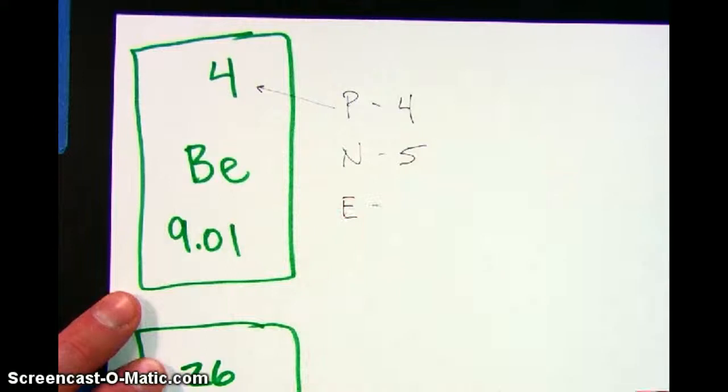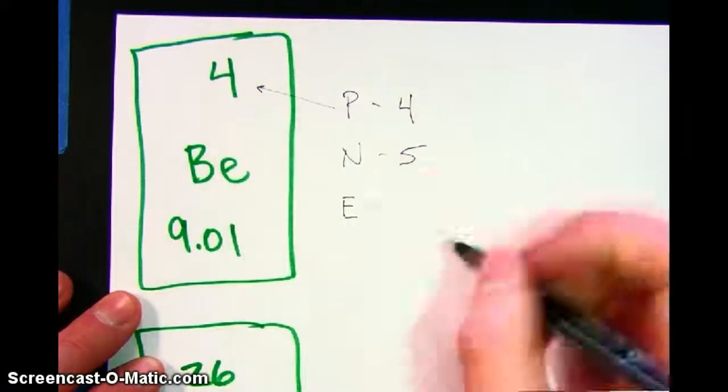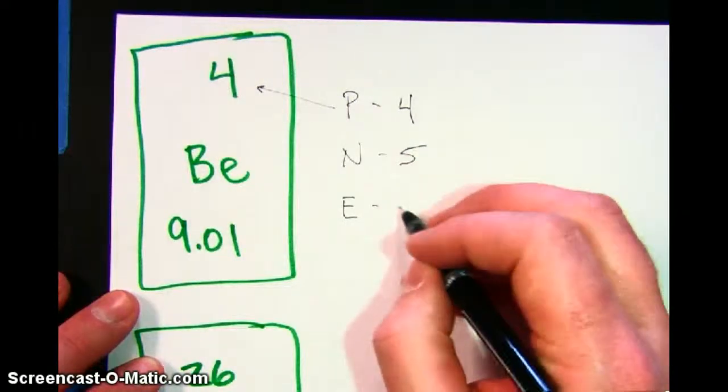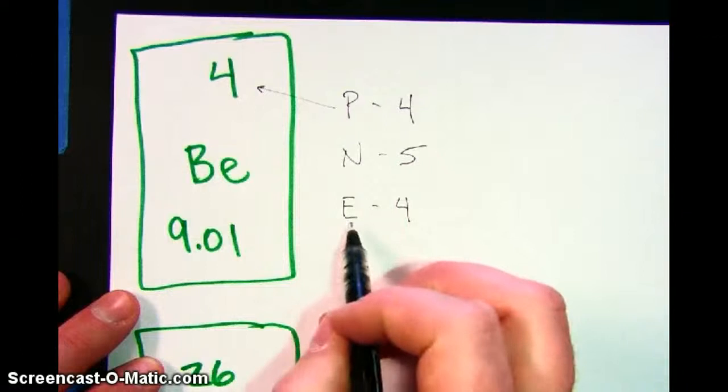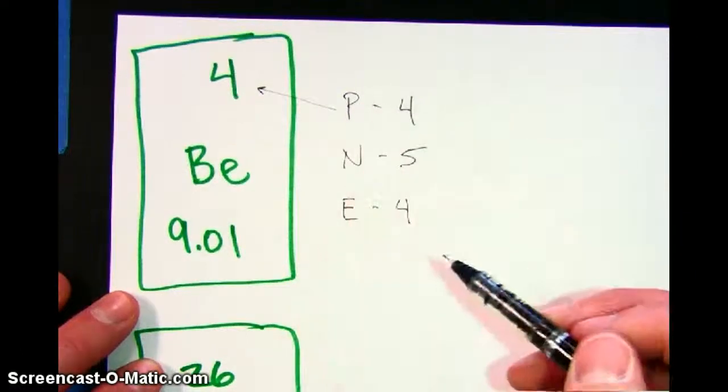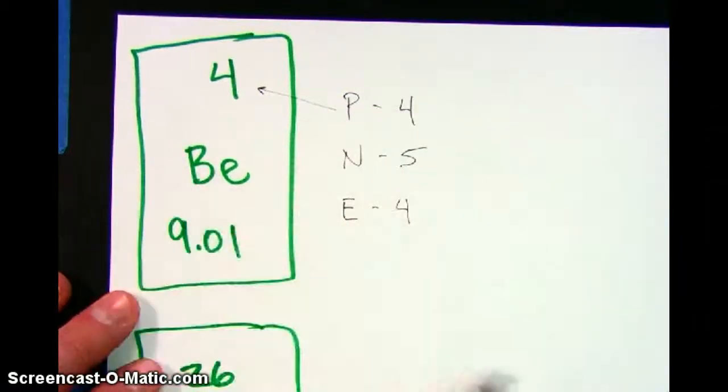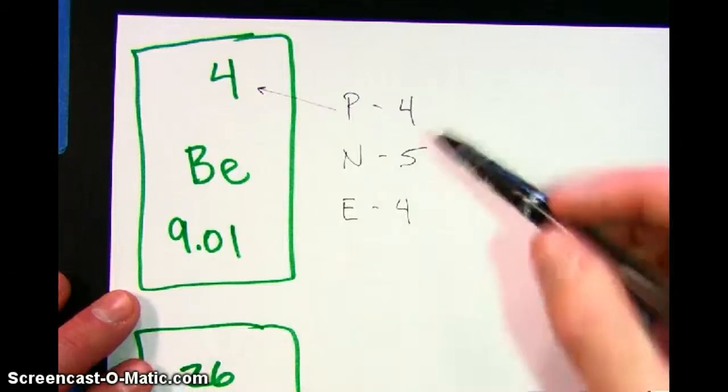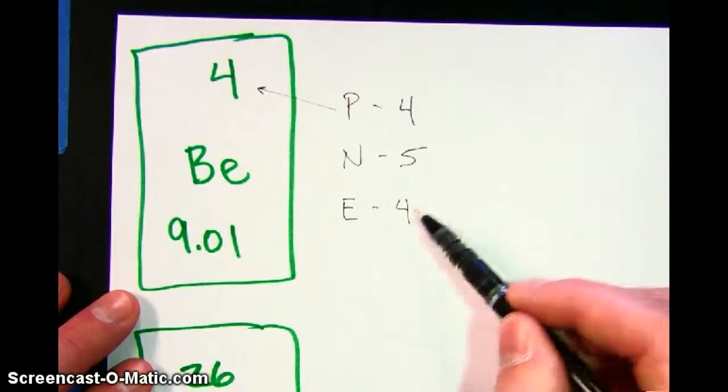For now, until we get to the ions video, electrons are the exact same as protons. That's because electrons have a negative charge and protons have a positive charge. And so we're talking about what's called a neutral atom. It doesn't have an overall charge. That means that the pluses have to balance out the minuses.